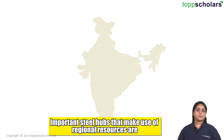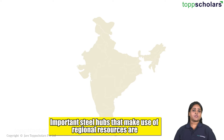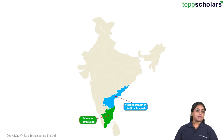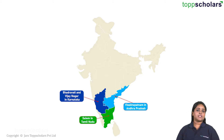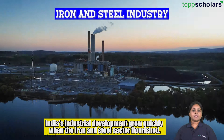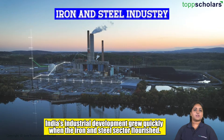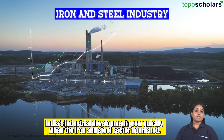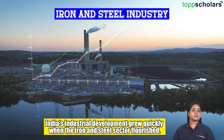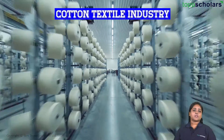Other important steel hubs that make use of regional resources are Salem in Tamil Nadu, Visakhapatnam in Andhra Pradesh, and Bhadravati and Vijayanagar in Karnataka. India's industrial development grew quickly when the iron and steel sector flourished.